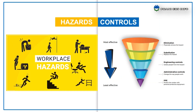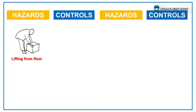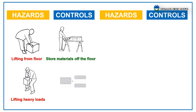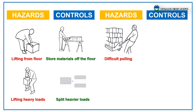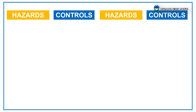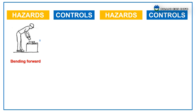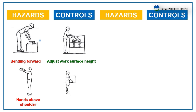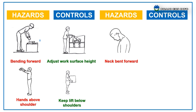Some of the hazards and controls of MSDs at the workplace: Lifting from Floor — store materials off the floor. Heavy Lifting Loads — control by splitting heavier loads. Difficult Pulling — use a powered pallet jack. Difficult Gripping — use good power grips. Bending Forward — adjust work surface height. Hands Above Shoulder — keep lifts below shoulders.